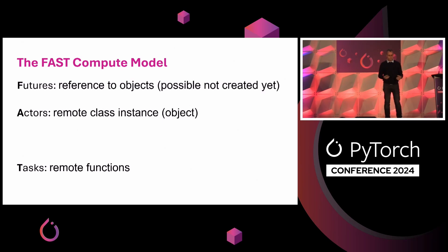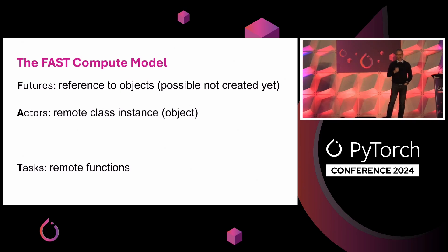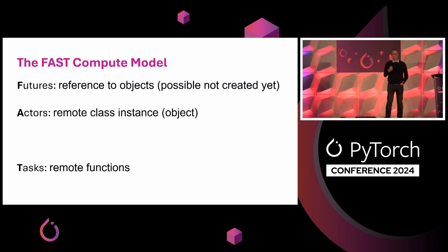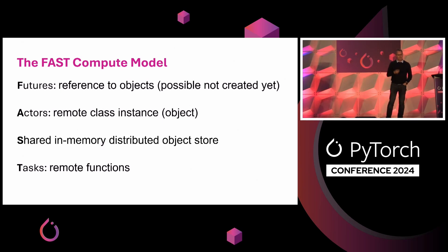Second, it not only executes functions as tasks and classes as actors remotely, but it does that asynchronously. So when you submit a task to the Ray runtime, you get immediately back a pointer to the result, which you call a distributed future, or future for short. This allows you to call the next task and the next task and the next task, and all these tasks are going to be executed in parallel. Finally, Ray has a shared in-memory distributed object store, which allows you to efficiently pass data by reference.